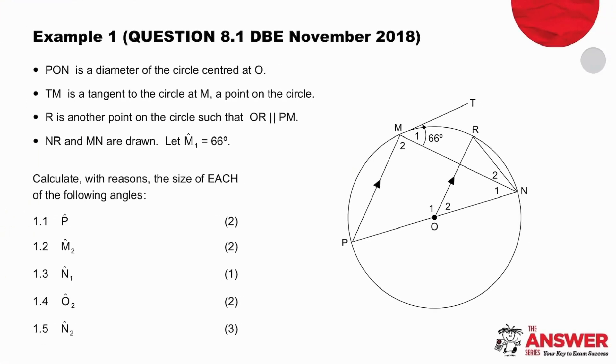As always, we are going to start by making sure that we know what we've been given and how we can use that information. So we're going to start with the fact that PON is a diameter. When we underline that on the sketch, we don't stop there. We actually take the fact that we have a diameter and we ask ourselves, what could we do with that? What would be useful? And that right angle is a direct result of diameter because the diameter always subtends a right angle.